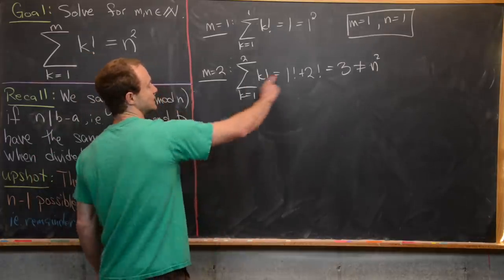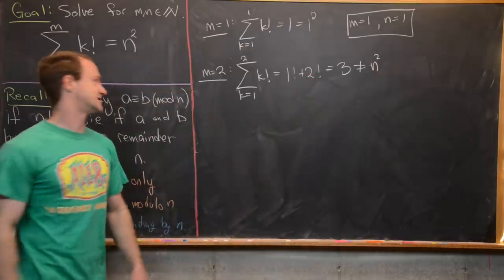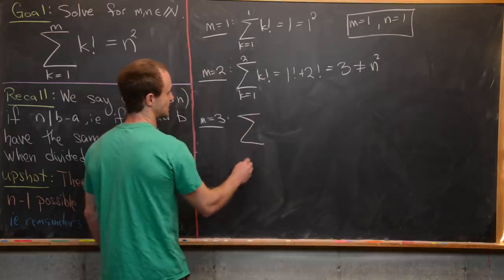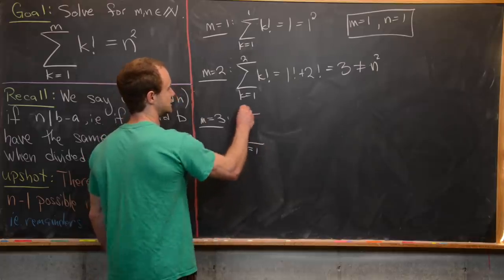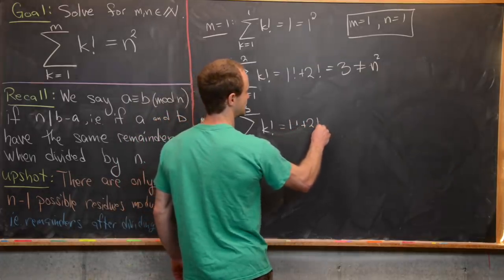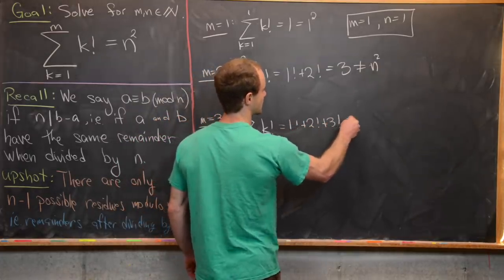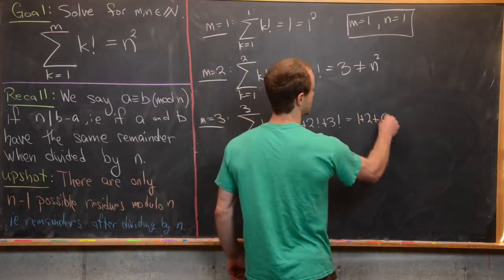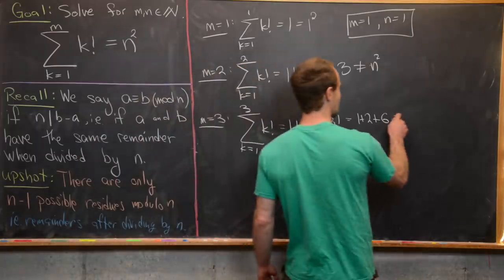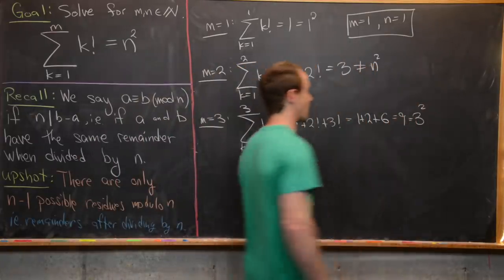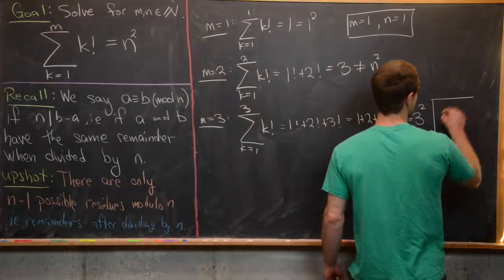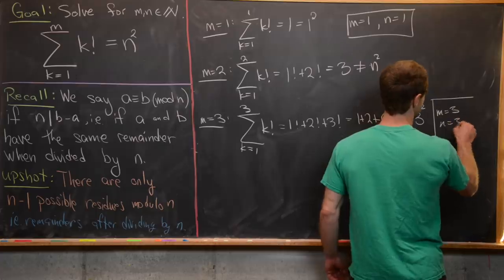Now for m equals 3, the sum from k=1 to 3 of k factorial gives us 1! + 2! + 3! = 1 + 2 + 6 = 9, which equals 3 squared. So we get a solution: m=3, n=3.